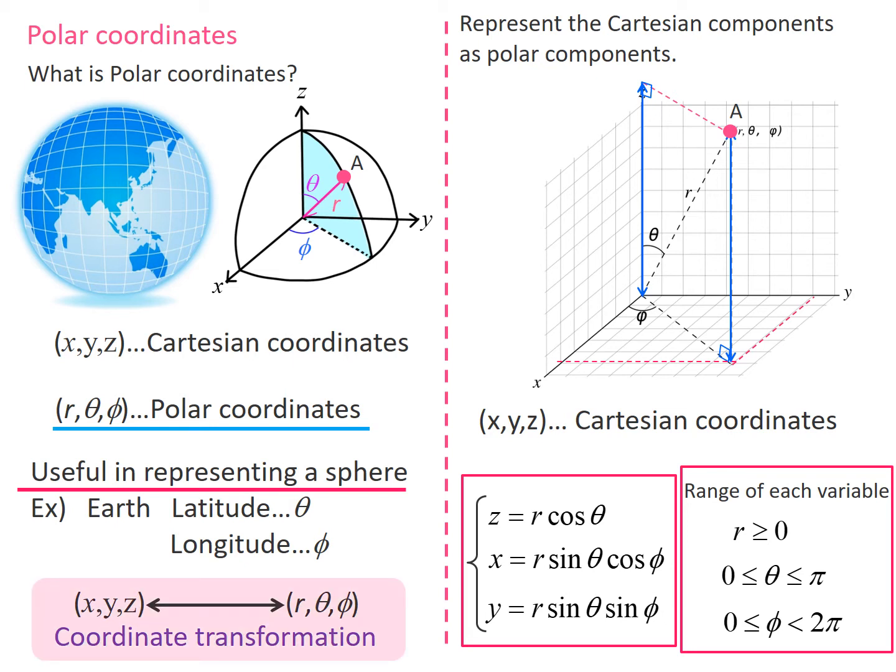If you can transform the Cartesian coordinates x, y, z to the polar coordinates r, theta, phi, or vice versa, you can freely choose a coordinate system that is easy to calculate, depending on the problem you want to solve.